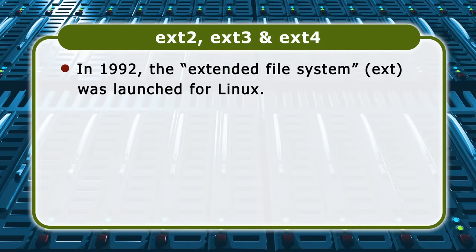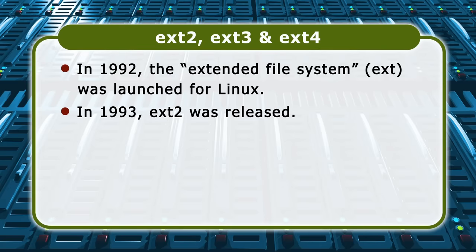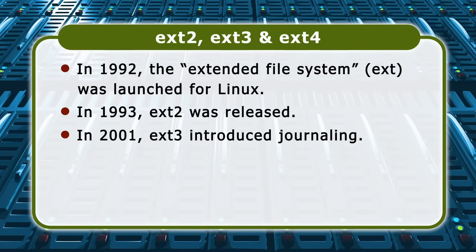In 1992, the Extended File System, or EXT, was launched specifically for Linux. In 1993, an update called Extended File System 2, or EXT2, was released and was for many years the default file system in many Linux distros. By 2001, EXT2 was upgraded to EXT3, which introduced journaling to protect against corruption in the event of crashes or power failures.